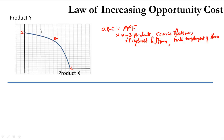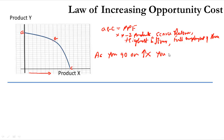The law of increasing opportunity cost says that as you go on increasing X, you have to sacrifice more and more Y. This is what the law of increasing opportunity cost tells us.